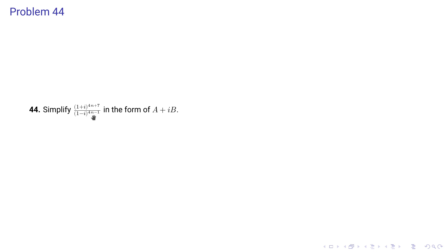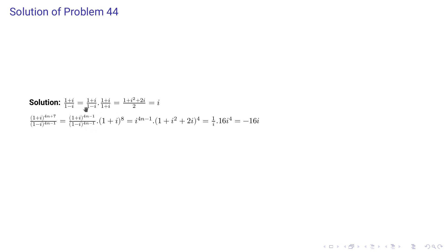Problem 44: simplify (1+i)^(4n+7) / (1-i)^(4n-1) in the form a + ib. First evaluate (1+i)/(1-i) by multiplying with the complex conjugate of the denominator — this equals i. We factor out the (4n-1) power, leaving (1+i)^8 / (1-i)^(4n-1) times the remainder. Since (1+i)/(1-i) = i, the expression becomes i^(4n-1) × (1+i)^2, and expanding (1+i)^2 = 2i.